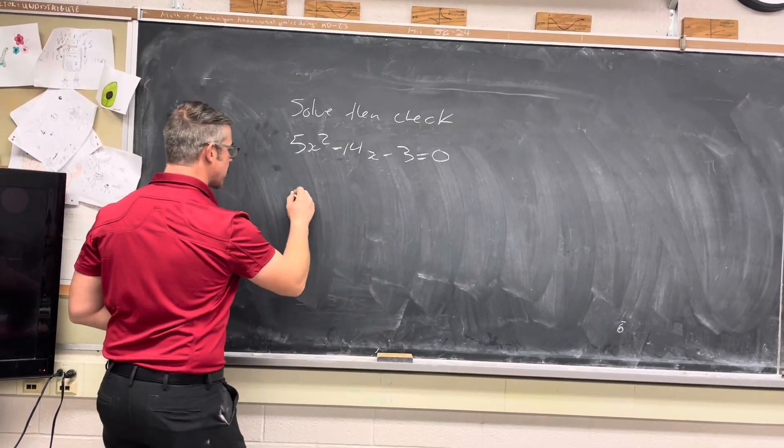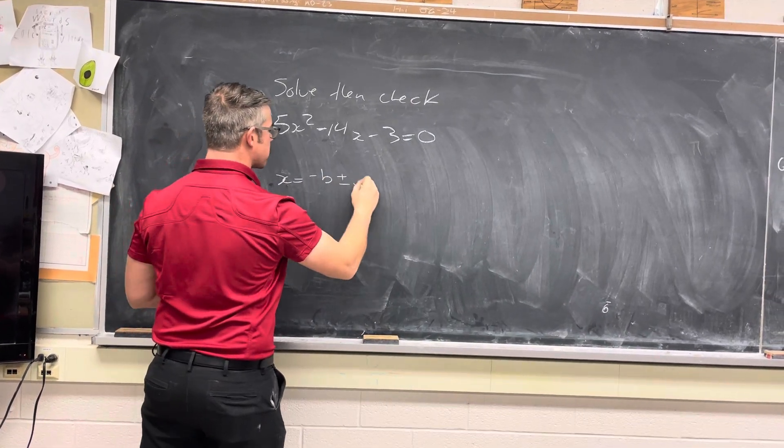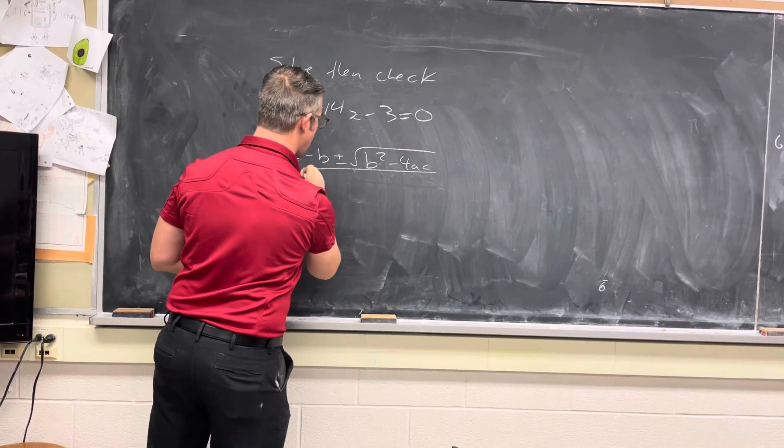So if you forget, the quadratic formula is x, or both x's rather, equals negative b plus or minus the square root of the discriminant, b squared minus 4ac, all over 2a.